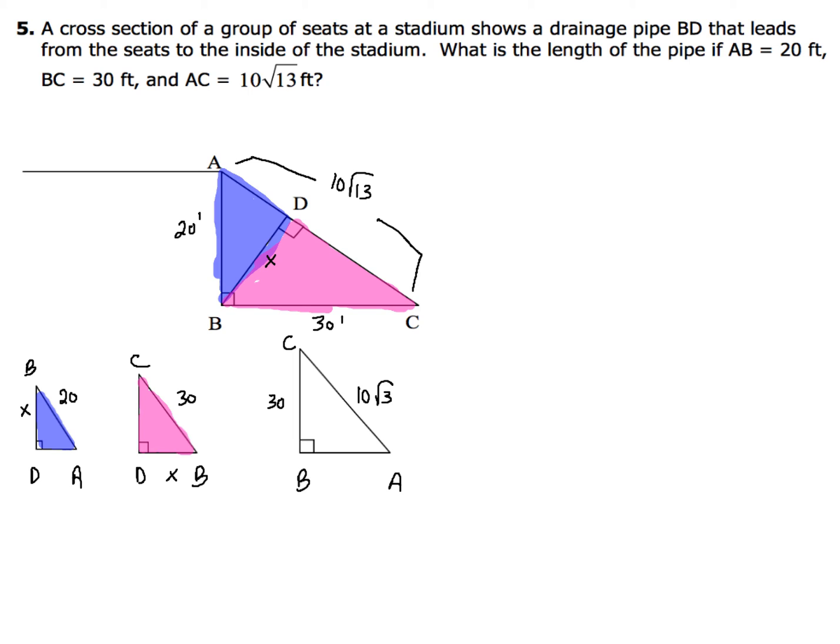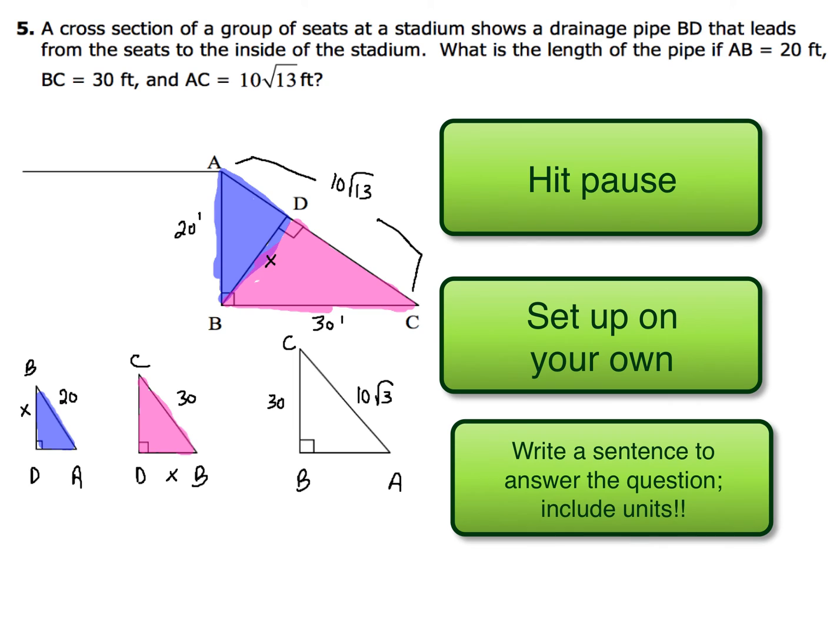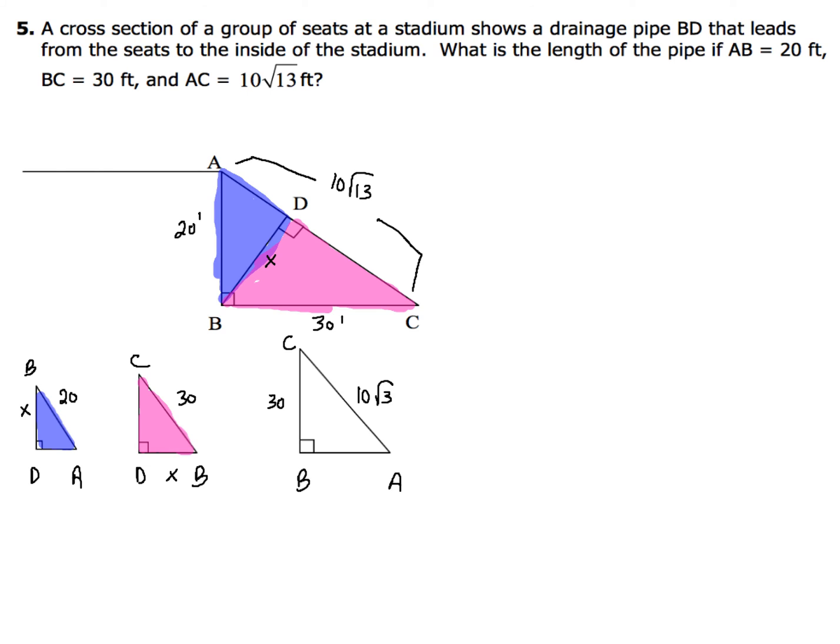Now the next thing that I want you to do is set up a proportion and solve the triangle. Now there's probably quite a few different proportions that you could write. So what I want you to do is write down the correct proportion that you see. In the end, we should come out with the exact same answer. Now when you're done with your answer, make sure you write a sentence. So go ahead and hit pause and solve this one on your own. I've got every bit of confidence in you that you can do this now.